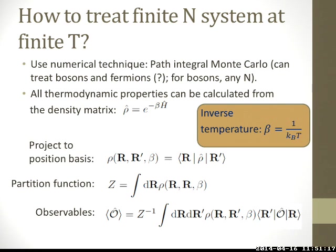Here comes the numerical method we are using. The path integral Monte Carlo method can treat both bosons and fermions at finite temperature. For bosons, we can reach a large number of particles, but for fermions, we are limited to a small number of particles. The essential ingredient of the path integral simulation is the density matrix. We project the density matrix into the positional basis and can get the partition function from the trace, and also calculate thermodynamic observables by taking the trace of the product of the density matrix and the observable.